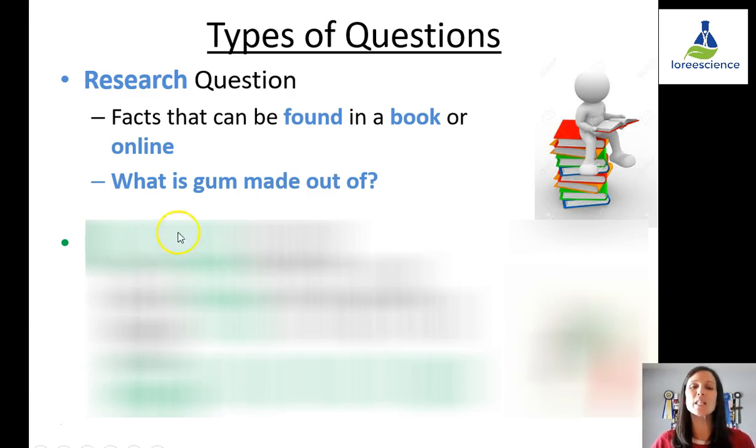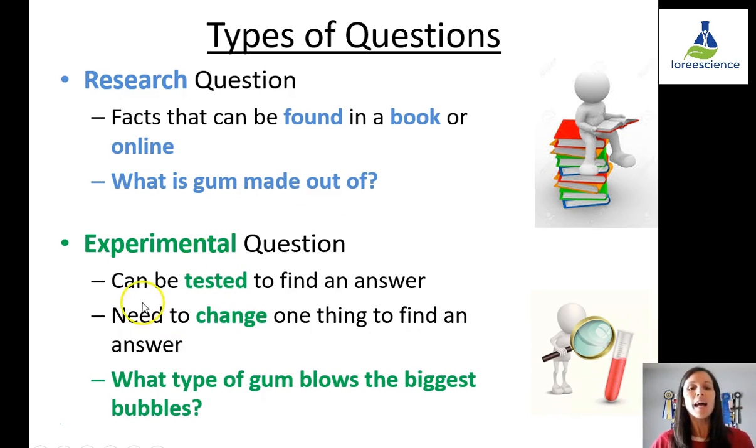Then there are what are called experimental questions and these can be tested to find an answer. So something has to be done and in the testing of it, something needs to be changed in one thing to find an answer. So for example, what type of gum blows the biggest bubble? What needs to be changed is the type of gum. So you could test Trident versus Hubba Bubba versus Excel. You'd be changing the type of gum and you would actually be doing a test or experimenting to find your answer.